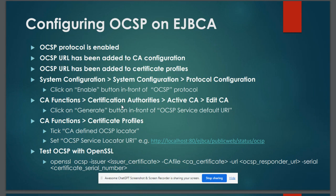To add the OCSP URL to our CA, we go to CA Functions and under CA Functions we go to Certification Authorities. We select the active CA, click the Edit CA button, and finally click the Generate button, which is available in front of the OCSP Service Default URL — this will create the URL for us.